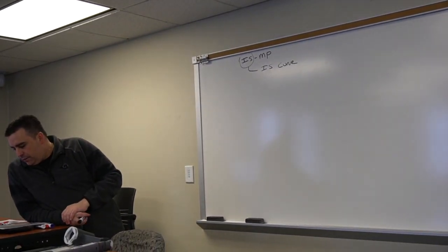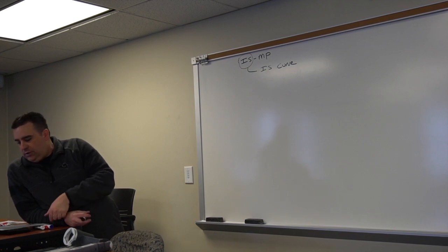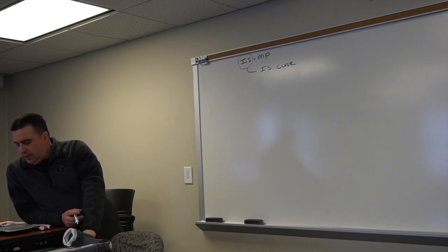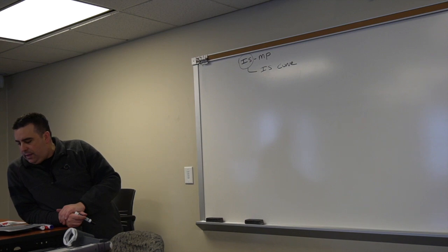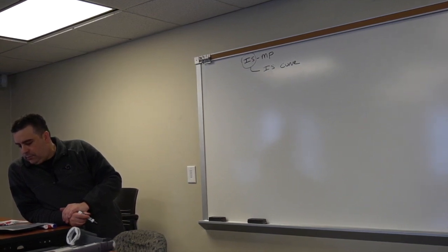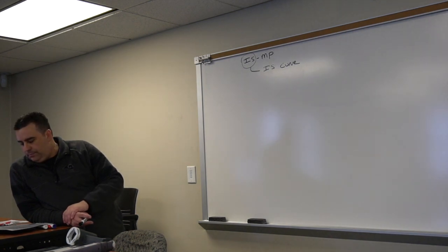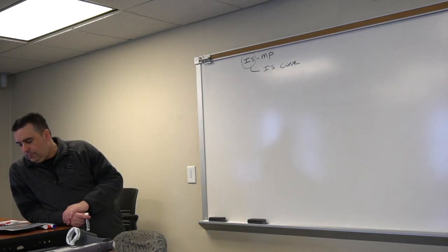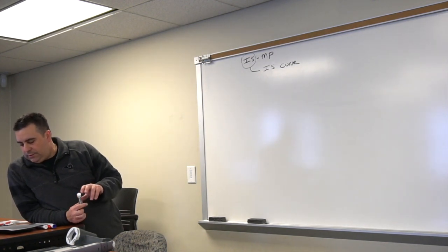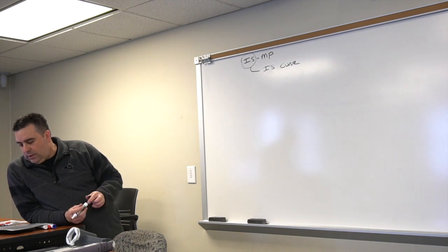The IS curve shows the combinations of interest rates and real GDP amounts that lead to goods market equilibrium. Shows the combination of interest rates and real GDP amounts that lead to goods market equilibrium.